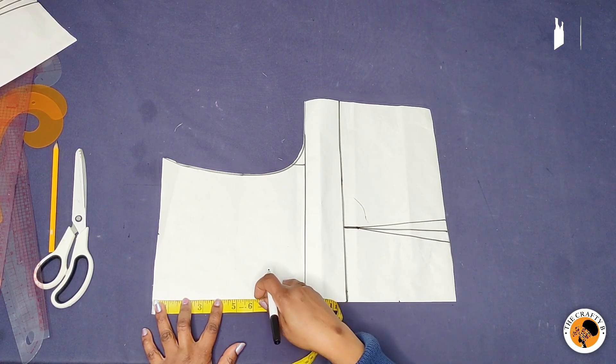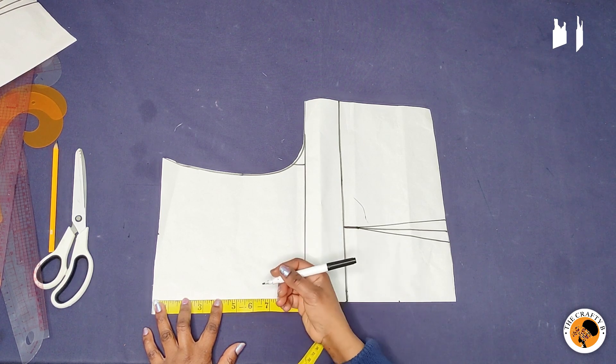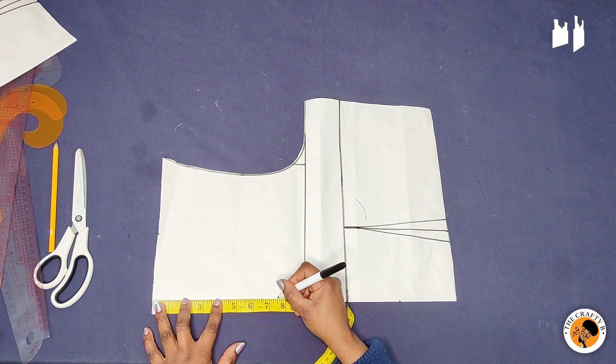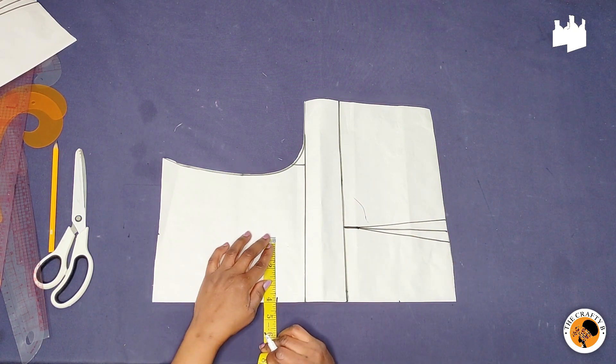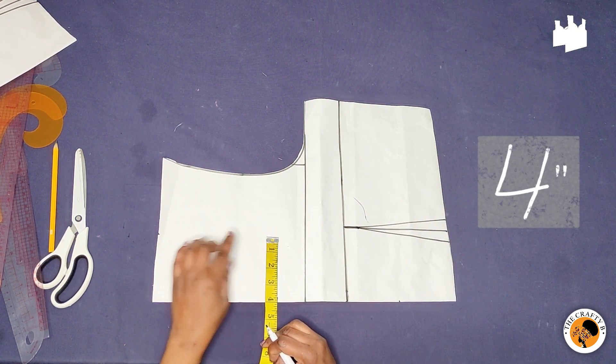So I'm marking seven and a half inches and I'm going to square just seven and a half inches. So I'm marking four inches here. What I mark on the neckline, I mark it down here, so I'm going to square the points like this.